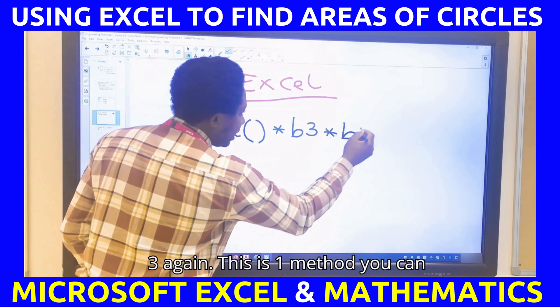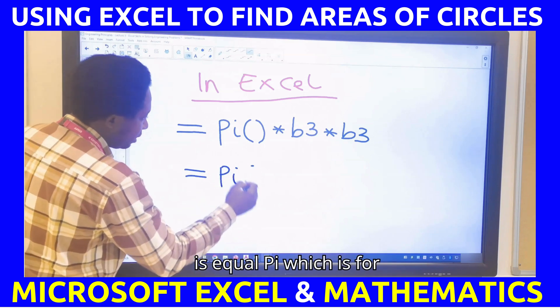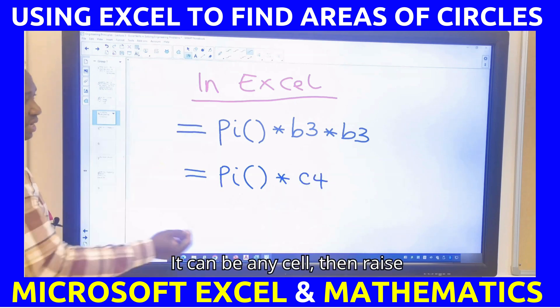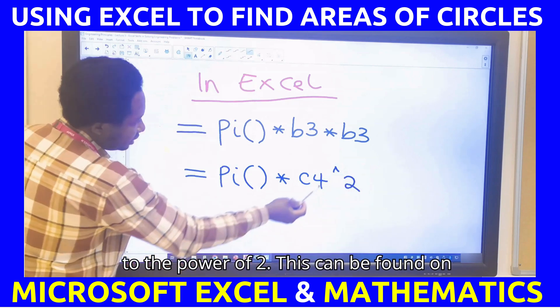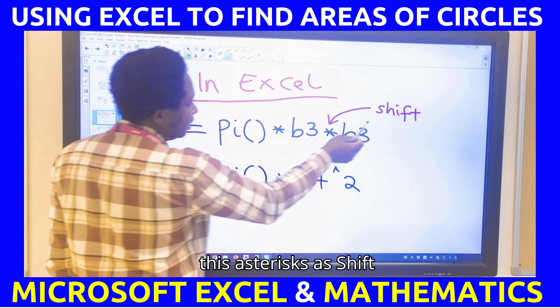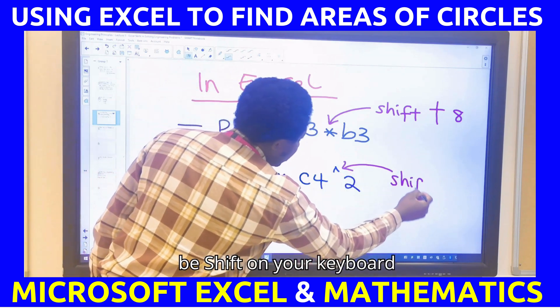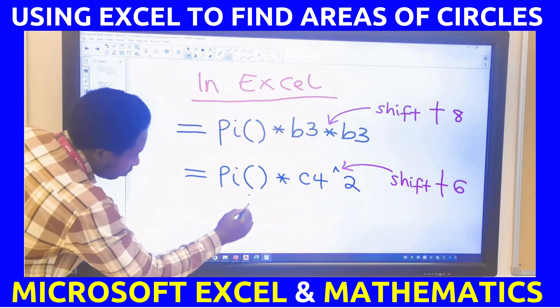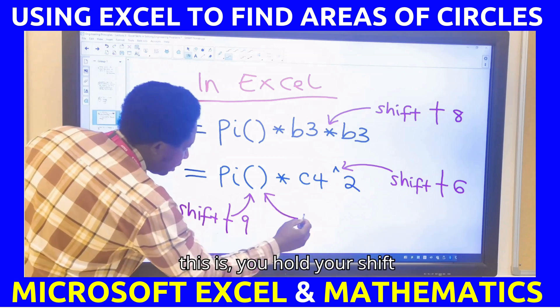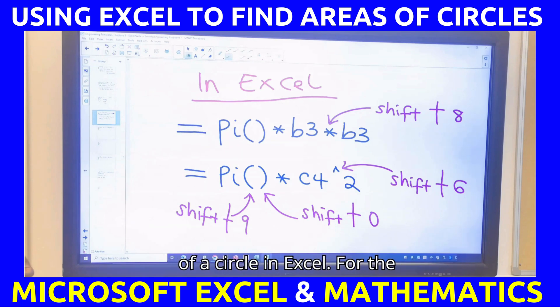There are two methods that you can apply in Excel. You can multiply this B3 again. This is one method you can use. Another formula you can use is equal pi, which is for pi, multiply by B3. We are just using B3 here. It can be C4. It can be any cell. Then, raise to the power of 2. This can be found on your keyboard. On your keyboard, you're going to have this X star X as shift while you're holding 8. While this can be shift on your keyboard while you're holding 6. While this is shift plus 9. And this is, you hold your shift key while you press 0. With this, we can now solve the area of a circle in Excel.